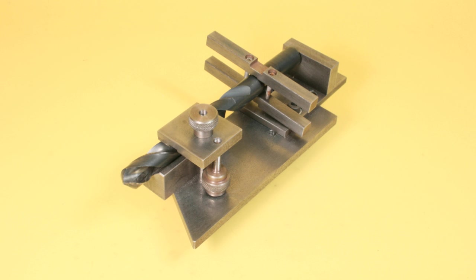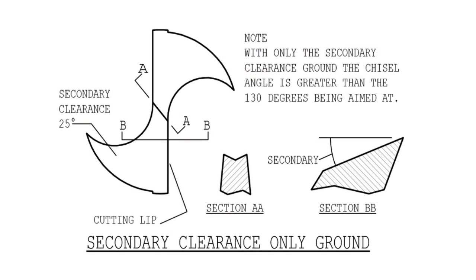Some slides follow which show the stages in sharpening a drill, but do take particular note of the cross section at the drill's point — section AA. The slide now showing shows the result of grinding the secondary clearance first, this being the preferred approach. Do take note that this results in the chisel being forked — see the cross section AA.